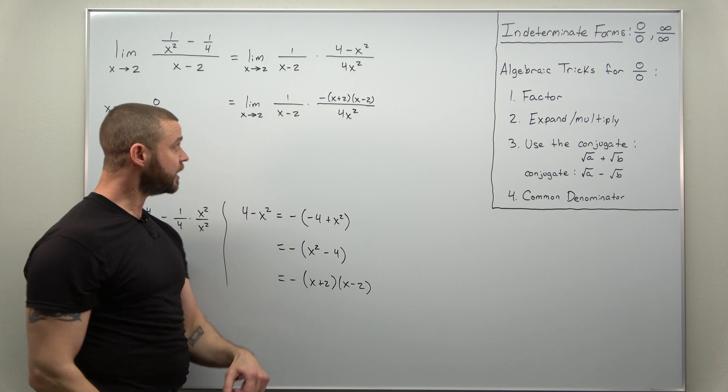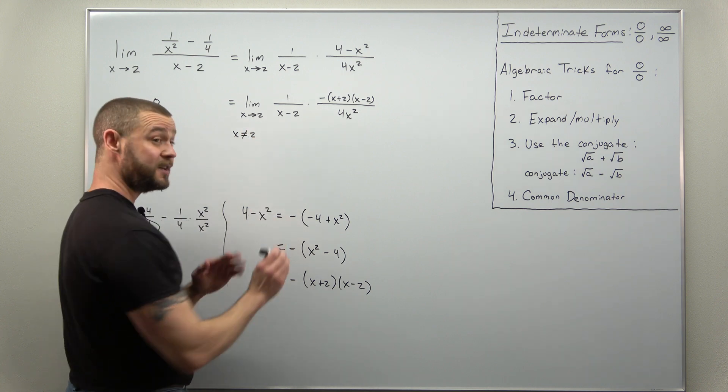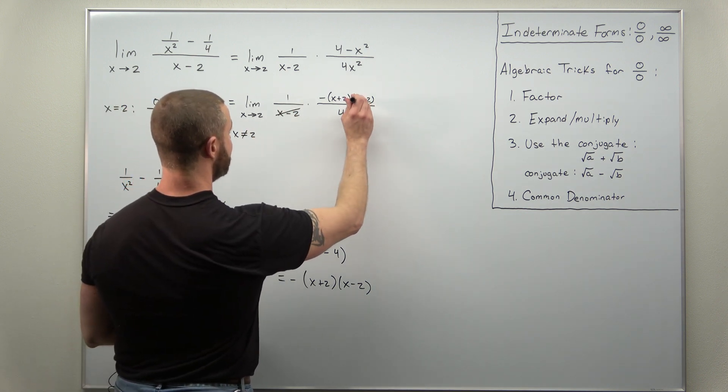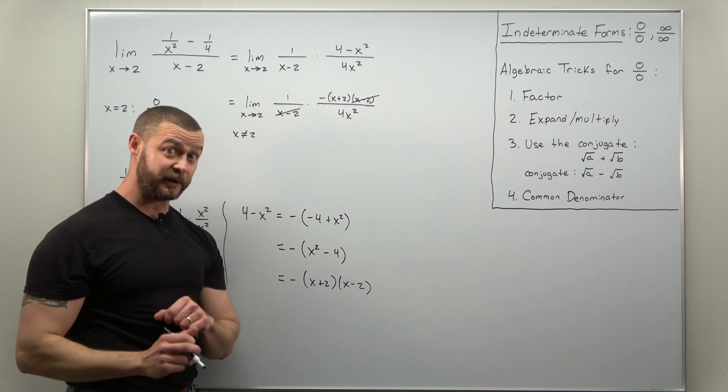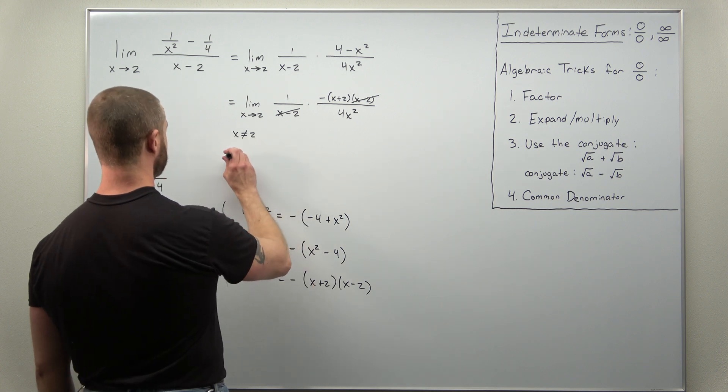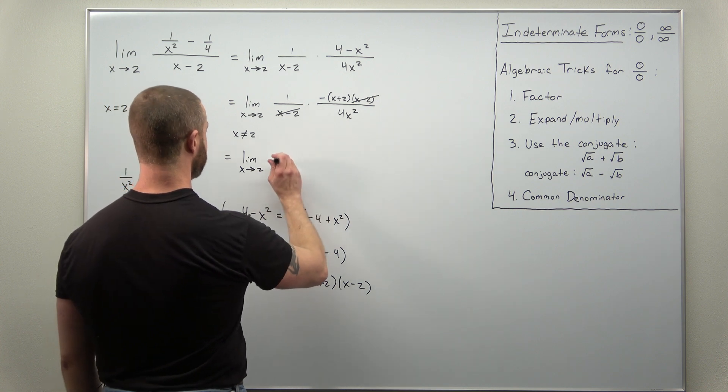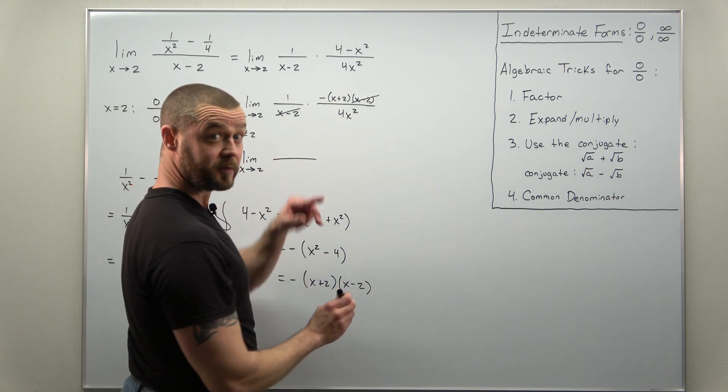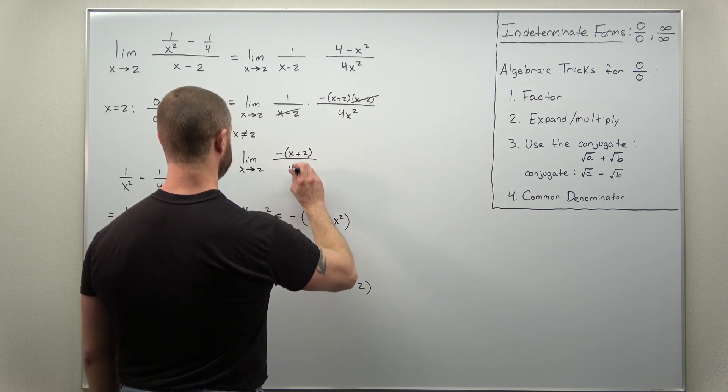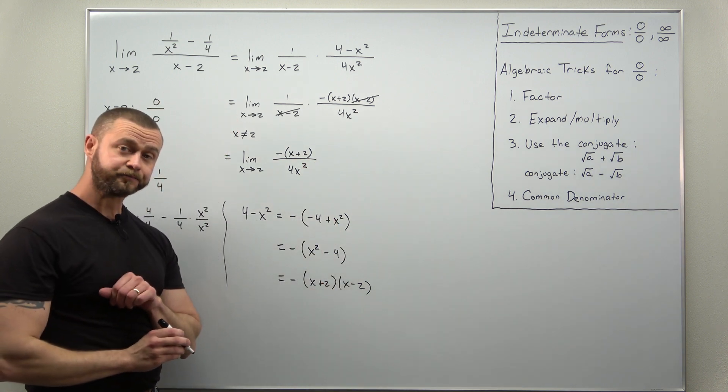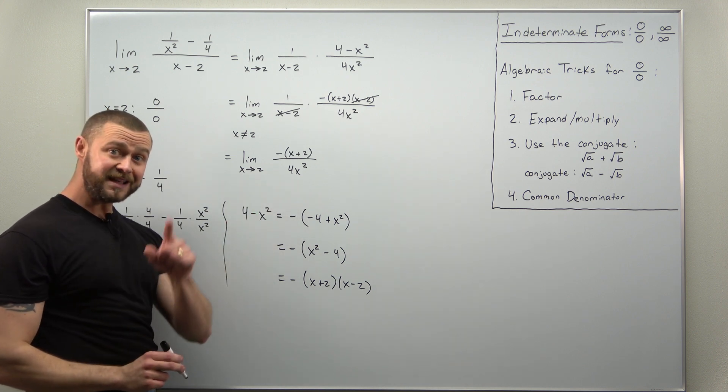All right, we're almost done. Since we're taking a limit as x approaches 2, we can go ahead and cancel out the factor of x minus 2, which was giving us the indeterminate form. And what we're left with here is the limit as x approaches 2 of a very simple function: negative times x plus 2, and then divided by 4x squared.